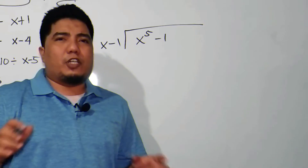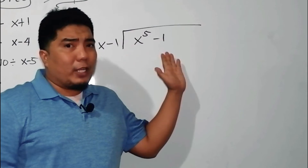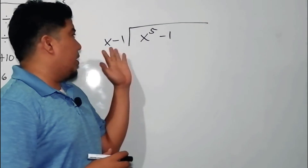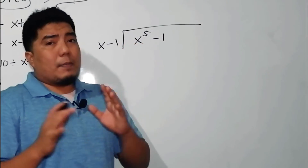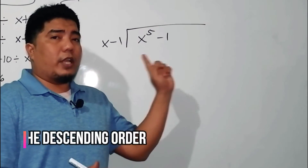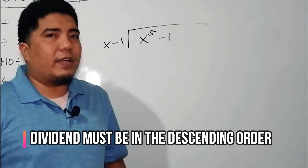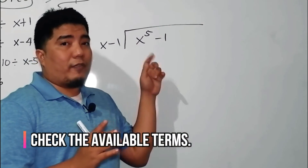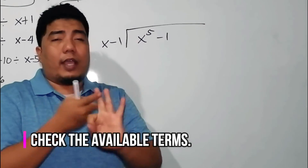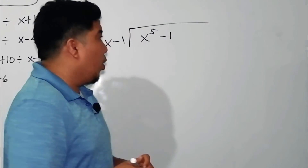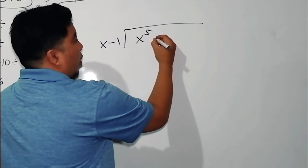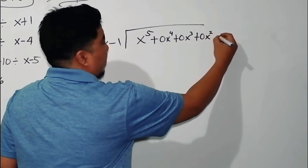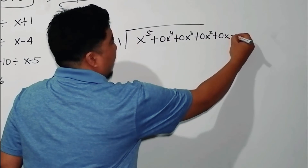We are now in our final example: a binomial divided by a binomial — x to the 5th minus 1, divided by x minus 1. This might seem tricky because x to the 5th is the first term and x is in the first degree. Remember: first check whether terms are arranged in descending order — they are. But next, check whether all terms are available. We have x to the 5th, but we don't have x to the 4th, x cubed, x squared, or x. We have the constant term. Therefore, we place 0x to the 4th, 0x cubed, 0x squared, 0x, and finally minus 1.